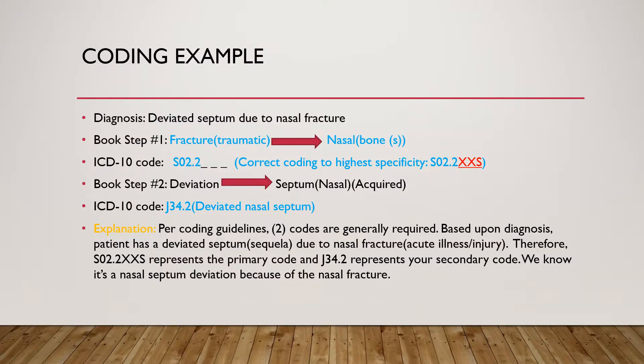Moving into our coding example, we're going to use the diagnosis: deviated septum due to nasal fracture. Per the sequela guidelines, we should have two codes for this particular encounter. In our first book step, we're going to look up the nasal fracture — going to Fracture, under Traumatic, and then to Nasal Bones.